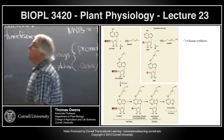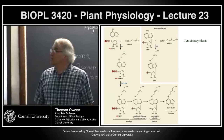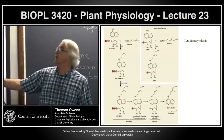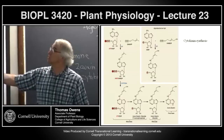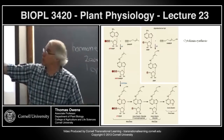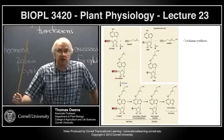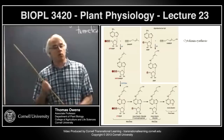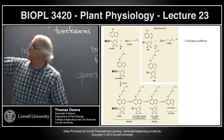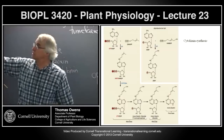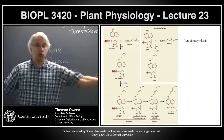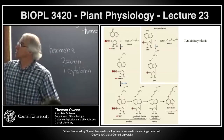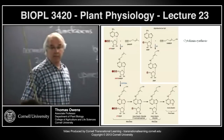The pathway for cytokinin biosynthesis in agrobacterium is slightly different. Rather than starting with ATP, it starts with AMP and a precursor that already has the hydroxyl group. The bacterial IPT enzyme — isopentanyl transferase — of bacterial origin is put into the plant genome. The plant enzyme uses a different substrate. Where the plant gets the bacterial substrate isn't entirely clear biochemically, though it clearly functions.